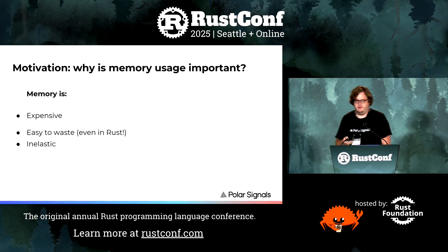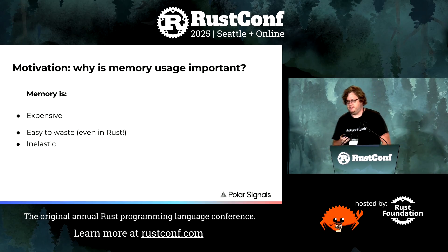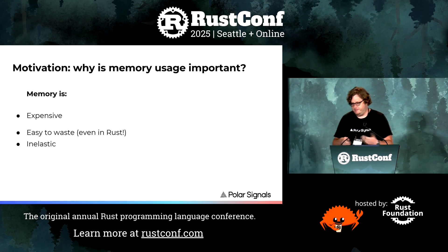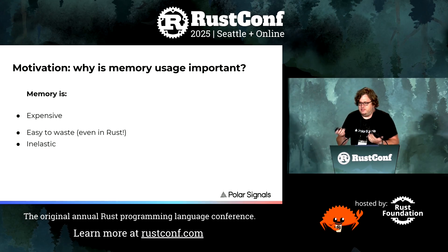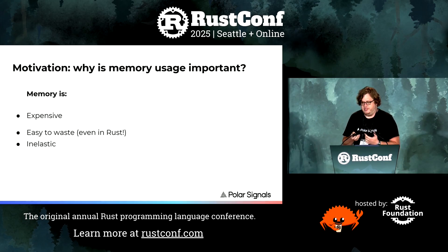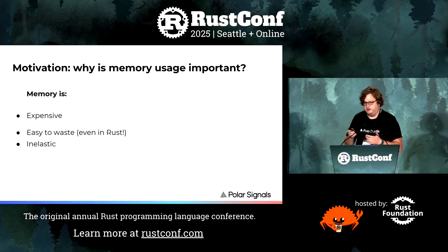So why do we care about memory profiling? Why do we want to know what's using heap space? Memory is expensive — AWS isn't free. It's also easy to waste even in Rust, which has features like RAII and zero-cost abstractions. And most importantly, it's inelastic. Unlike CPU, where if you're using too much you just get slower, if you're using too much memory, you get killed.